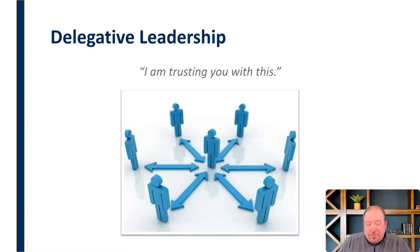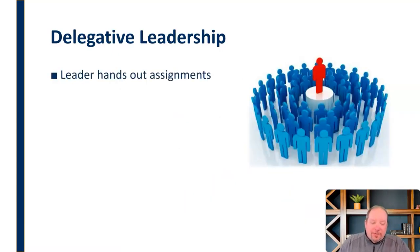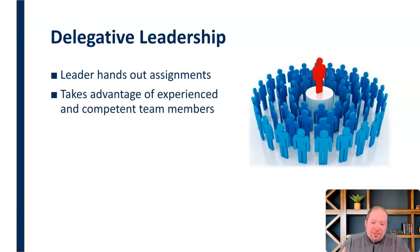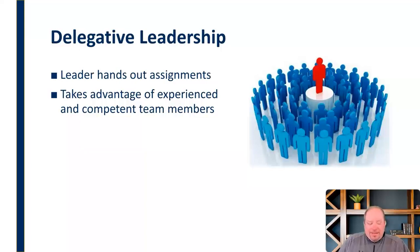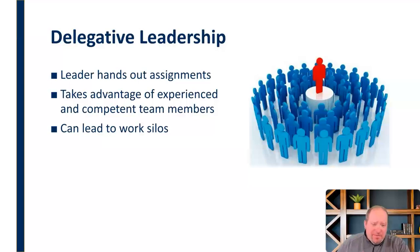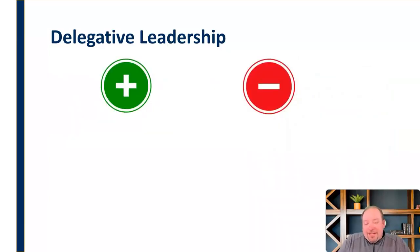Next, delegative leadership basically says, "I'm trusting you with this." The leader hands out assignments to group members and takes advantage of experienced, competent team members — you just hand something off and say, you know how to do this, so go do it. However, it can lead to work silos. People get protective over their project and don't want anyone else involved, creating a situation where one person doesn't know what the rest of the group is doing and they're not seeing the bigger picture.